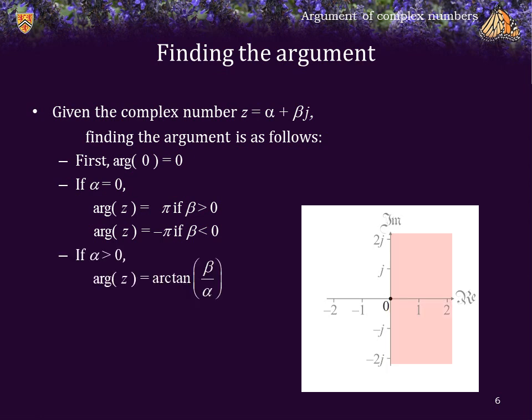If α > 0, then we can find the argument simply by calculating the arctangent, or inverse tangent, of β/α. Remember, tangent is opposite over adjacent, so in this case the opposite is the imaginary component, whereas the adjacent is α.